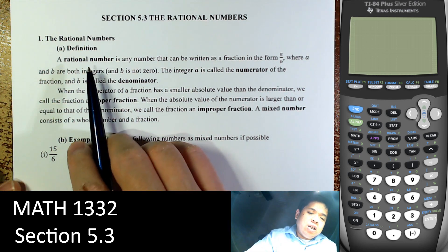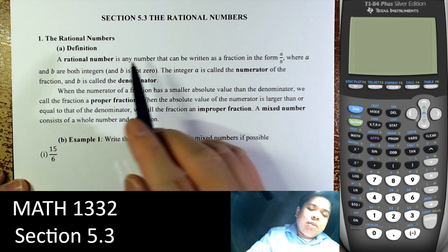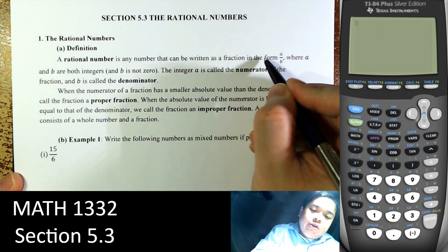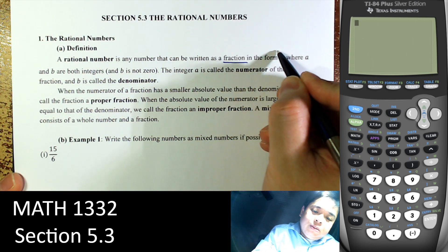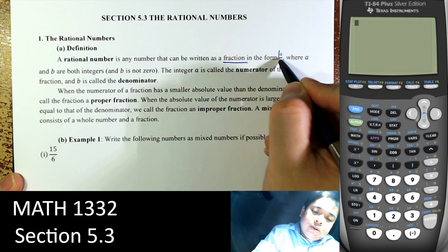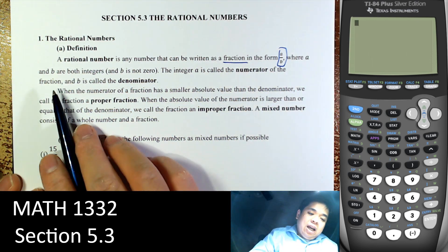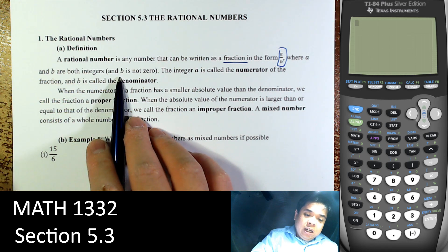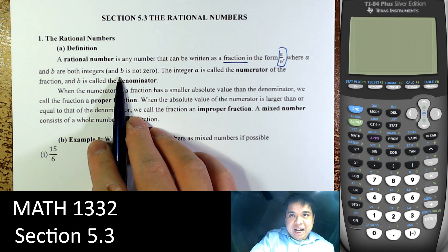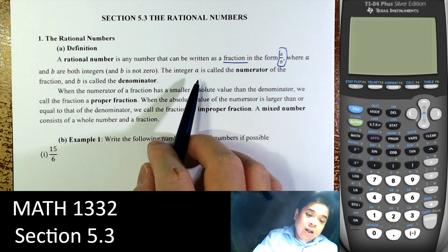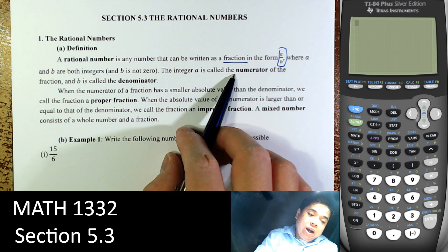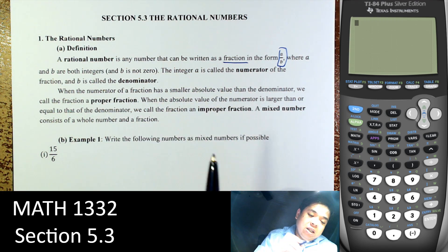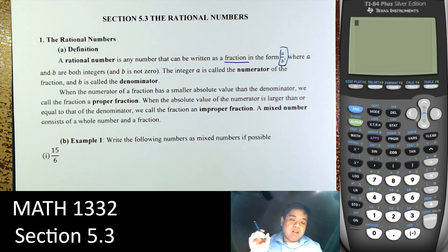Rational numbers is anything that can be written in fraction form, where A and B are both integers, B is not zero — we can never divide by zero. The top A is the numerator, the bottom is the denominator. So anything that can be put in fraction form is considered a rational number.